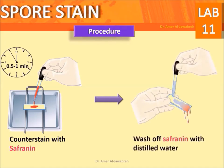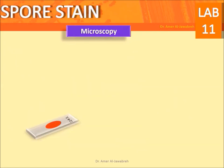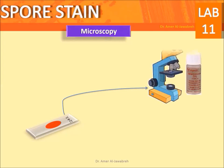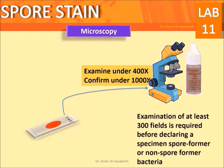Counterstain with safranine for up to one minute. Wash off safranine with distilled water. Blot the slide dry with paper, or allow to air dry vertically. For microscopy, examine under 400x and confirm under 1000x. Examination of at least 300 fields is required before declaring a specimen spore-forming or non-spore-forming.